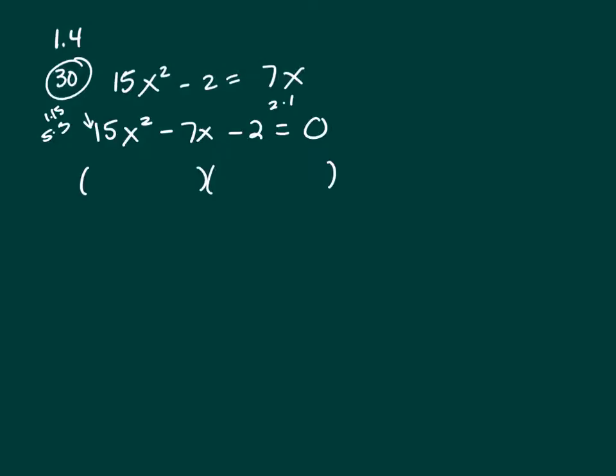I'm using the trial and error method. So I'm going to go with the 5 and 3. So 5x and 3x. And remember you want to get a minus 7x in the middle. The plus 1 and the minus 2. See if that works.